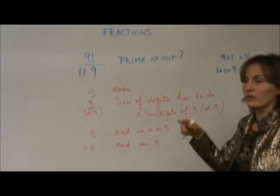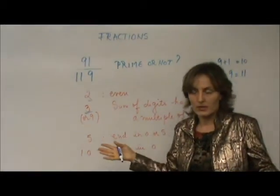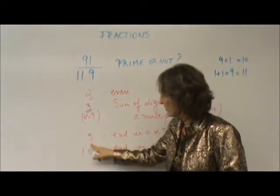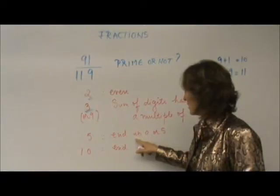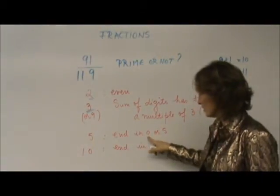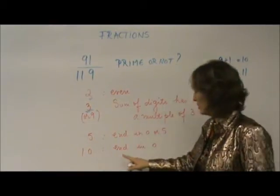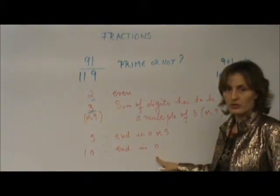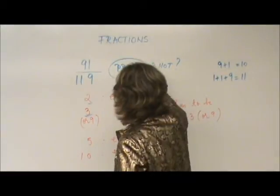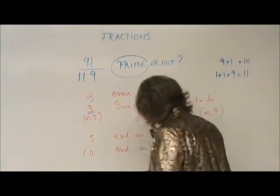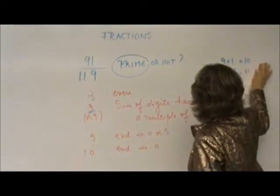But anyway, if one of them cannot be divided, so it's impossible to reduce. Can they be divided by 5? No, because the end of the number should be 0 or 5. Can they be divided by 10? No, because the end of the number should be 0. So, it is prime or not? If we don't know the next rule, we will suppose that they are prime. But there is one more rule.